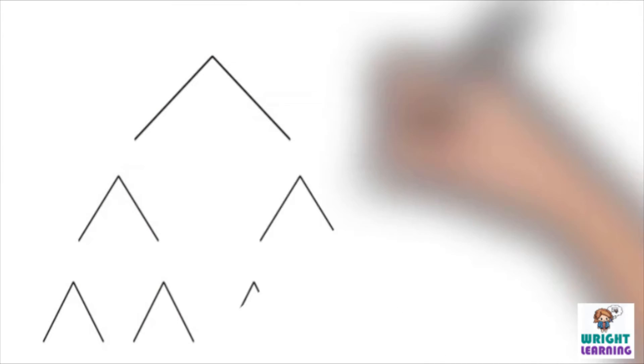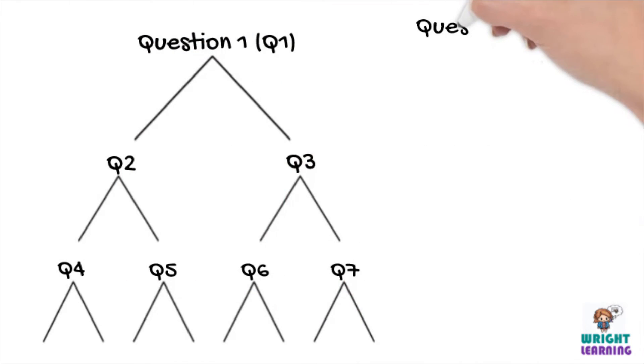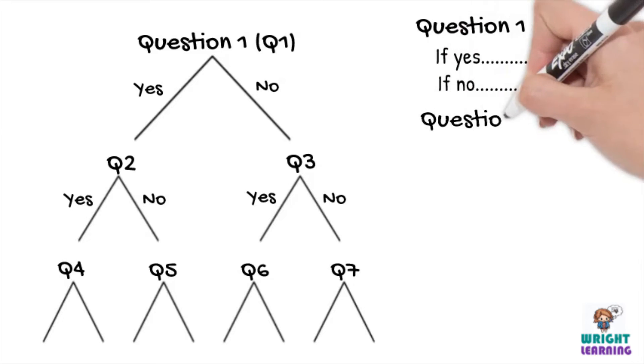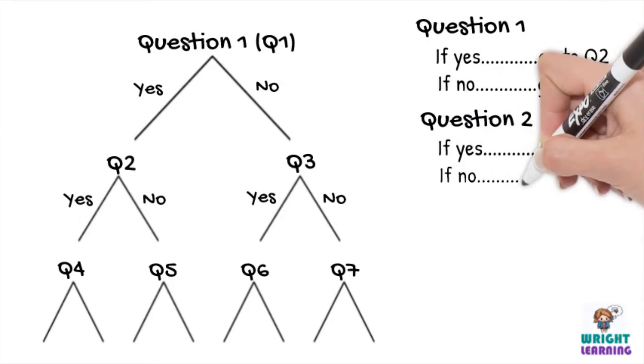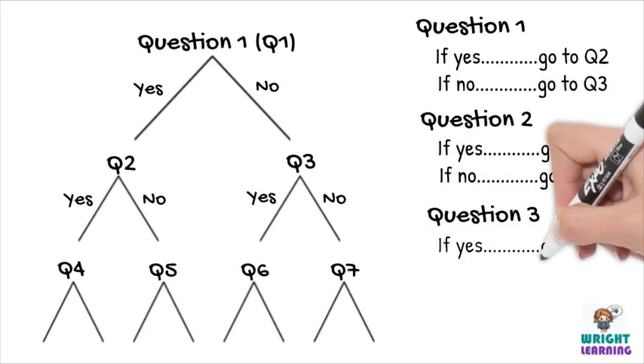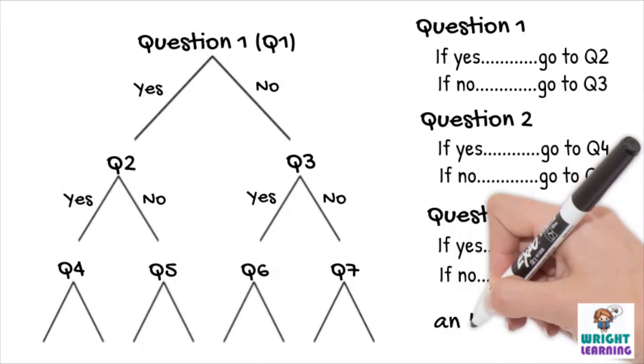As well as a tree diagram, which is a visual representation of a dichotomous key, this time we're going to write down yes-no questions at each step, so we can produce a written dichotomous key as well. It may look a little bit tricky right now, but don't worry, we'll do it together as we work through our example.